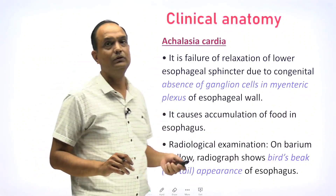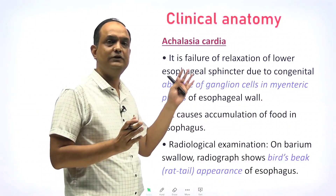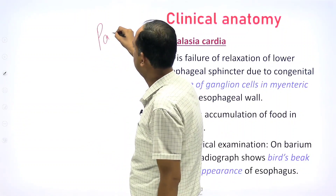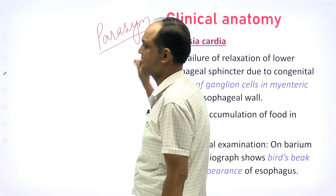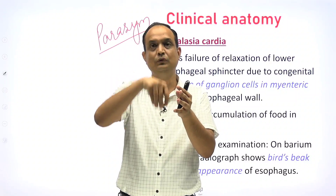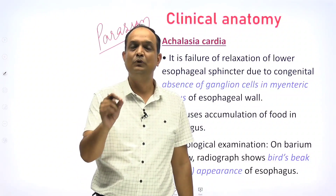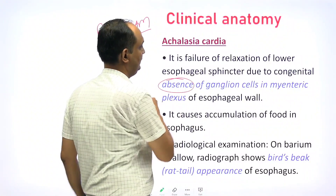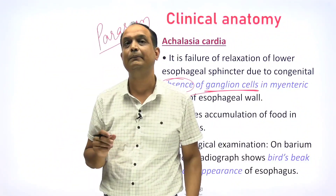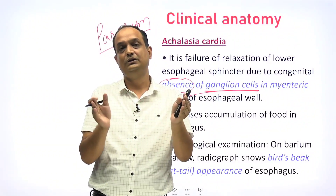One more important clinical topic is achalasia cardia. Achalasia cardia is the failure of relaxation of the esophagus. As discussed in Part 1, the parasympathetic nerve supply is responsible for relaxation of the esophagus — the esophagus remains closed, but during swallowing it relaxes so food can pass. If parasympathetic stimulation does not occur, relaxation fails. The most common cause is the absence of ganglionic cells in the myenteric plexus.